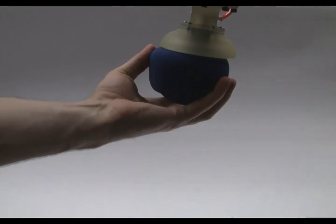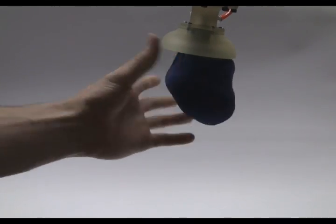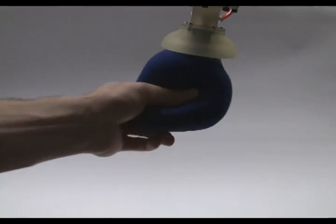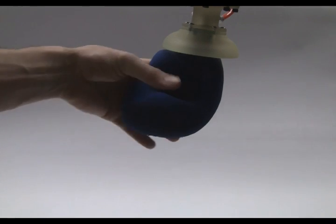The secret is the jamming phase transition of granular materials. When a granular material, like sand for example, is loosely packed, it can flow and pour like a liquid. Think of the sand flowing through an hourglass.